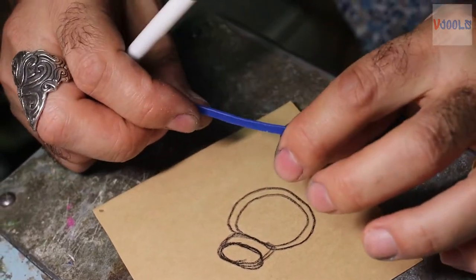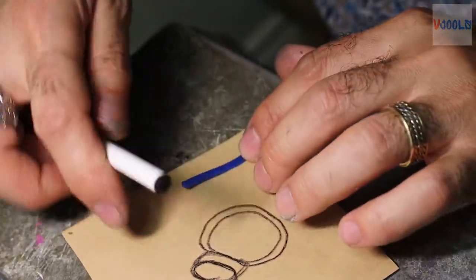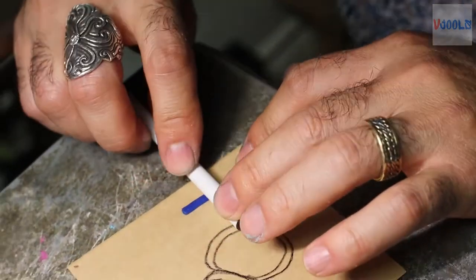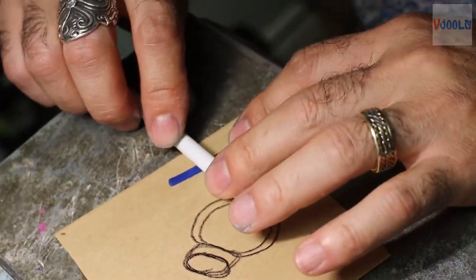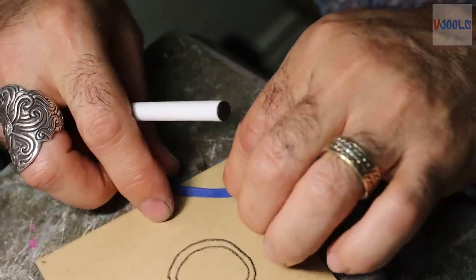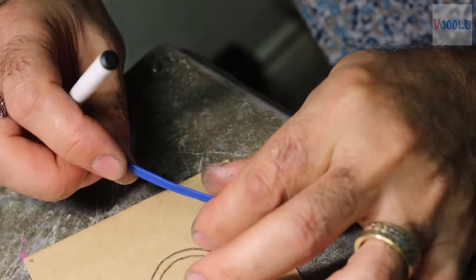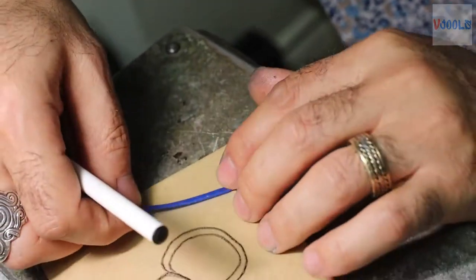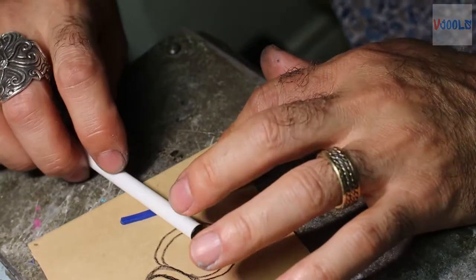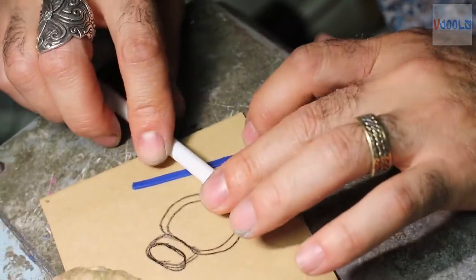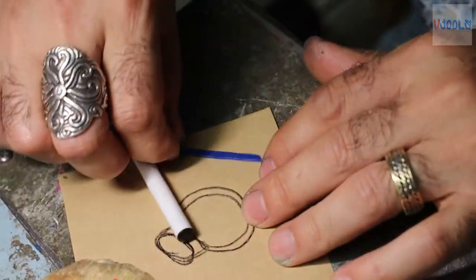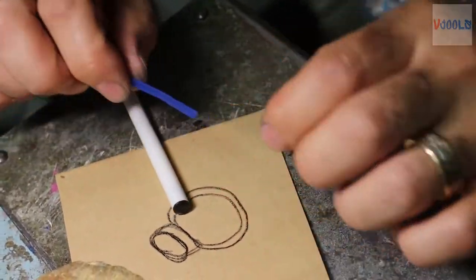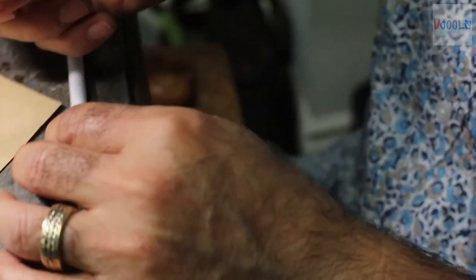When you look from the side you're going to see where you need to do a little more. You can use your gauge - I'm not using a gauge because I'm so used to making this.